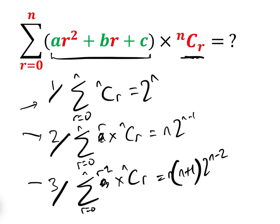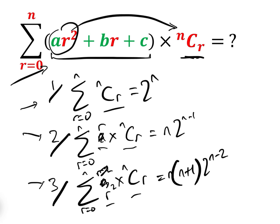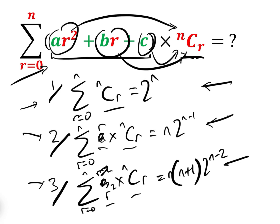With these three formulae, you could work out for R cubed or R to the four or R to the five or whatever. Once we have the sum of NCR, the sum of R times NCR, and the sum of R squared times NCR, we can split any quadratic into the sum of AR squared times NCR, add the sum of BR times NCR, add the sum of C times NCR, using these three formulas.